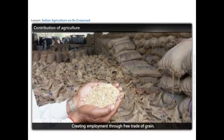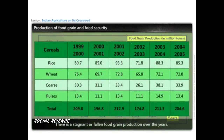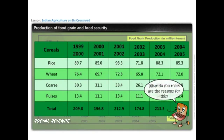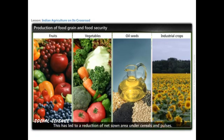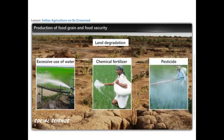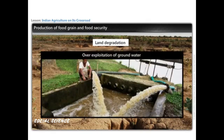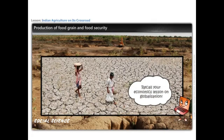Food grain production in India has been stagnant or falling over the years. There has been a gradual shift from cultivation of food crops to fruits, vegetables, oilseeds, and industrial crops, reducing net area under cereals and pulses. Land degradation caused by excessive use of water, chemical fertilizers, and pesticides is another reason. Over-exploitation of groundwater by big farmers has led to drying aquifers, pushing many marginal and small farmers out of cultivation.